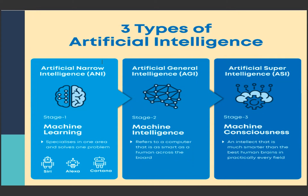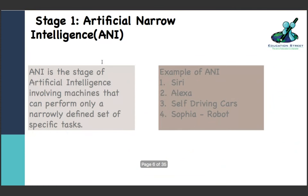Thank God the second and third levels of artificial intelligence are still not in reality. So coming to the first part which is the reality - Artificial Narrow Intelligence, or ANI. It is a stage of AI involving machines that can perform only a narrowly defined set of specific tasks.